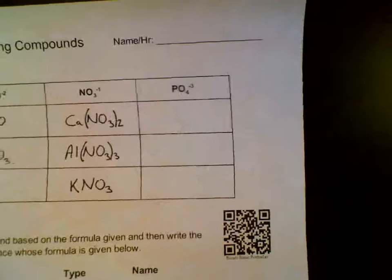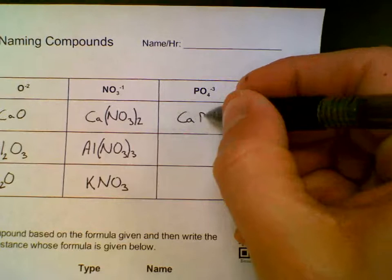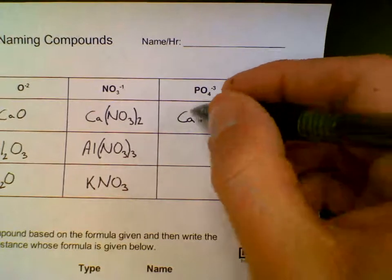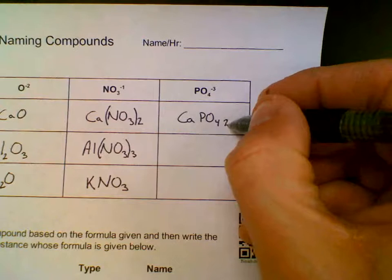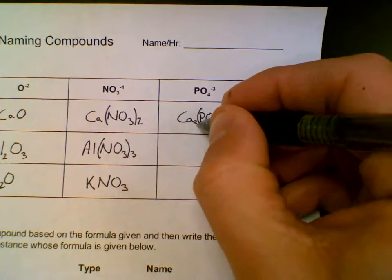Phosphate ion with calcium ion. Ca plus 2, PO4 minus 3. The 2 on the Ca goes on the PO4, we need parentheses around that polyatomic ion. The 3 goes on to the Ca, giving Ca3(PO4)2.